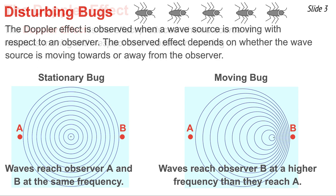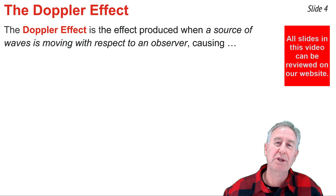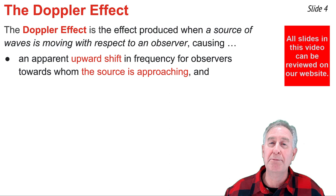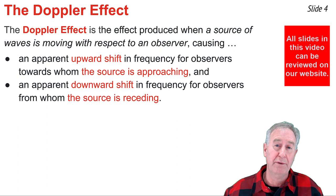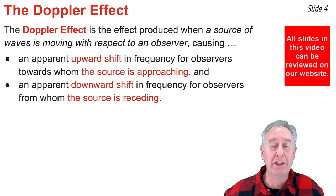The Doppler effect is the effect that is produced when the source of waves is moving with respect to an observer. It causes an apparent upward shift in frequency for any observer towards whom the source is approaching, and it causes a downward shift in frequency for any observer from whom the source is receding. Here, the word receding means to move away from.